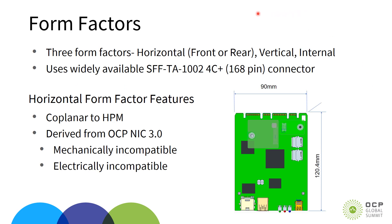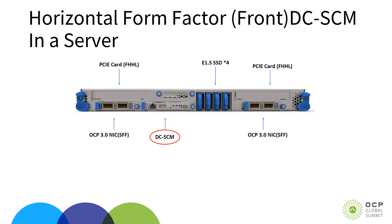There are three supported form factors: the horizontal form factor, which can either be front or rear, the vertical form factor, and the internal form factor. All form factors use the industry standard 168-pin 4C+ connector. On the right, we see a picture of a horizontal form factor SEM. It is a 120mm by 90mm module, coplanar to the HPM. It is derived from the OCP-NIC 3.0 but is wider and longer than an OCP-NIC, making it mechanically and electrically incompatible with the OCP-NIC form factor. This shows the horizontal form factor SEM in a typical 1U server, with front accessible ports and LEDs visible on the SEM.